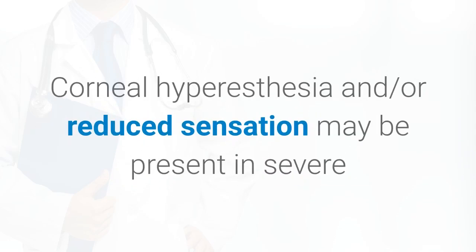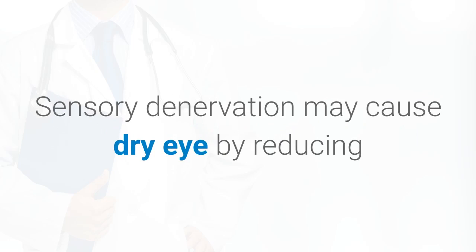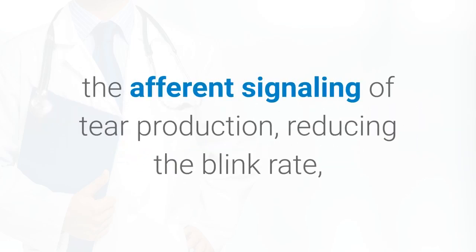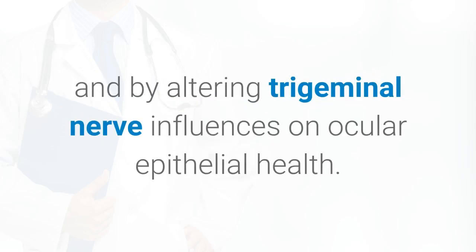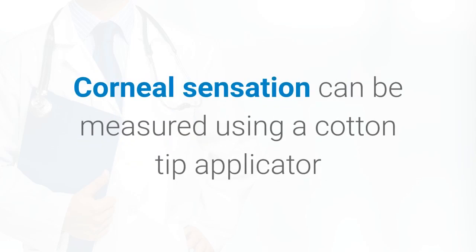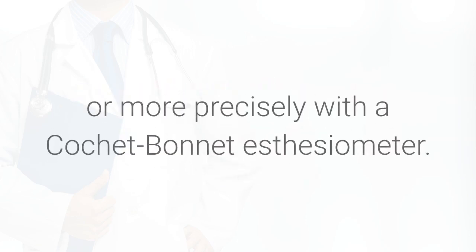Corneal hyperesthesia and/or reduced sensation may be present in severe and chronic dry eye disease. Sensory denervation may cause dry eye by reducing the afferent signaling of tear production, reducing the blink rate, and by altering trigeminal nerve influences on ocular epithelial health. Decreased corneal sensation can also result from chronic dry eye. Corneal sensation can be measured using a cotton tip applicator, or more precisely with a Cochet-Bonnet esthesiometer.